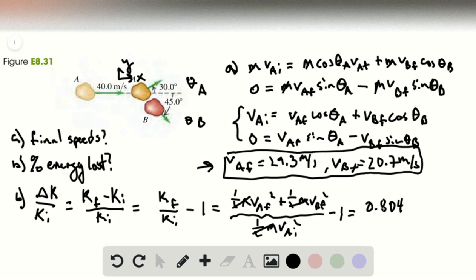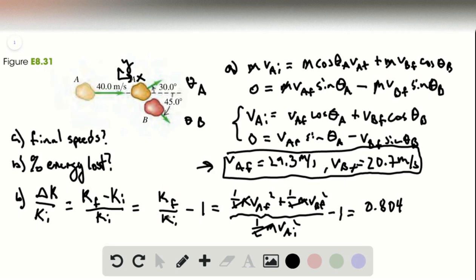So the way of thinking about this is this is how much energy is left from the initial state. And then subtracting one from that tells us what the percent change is. And then this is of course—oh, it is negative—or about 20 percent is lost.